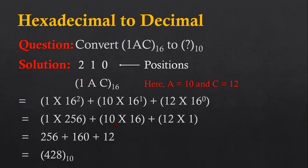The same formula will be used for conversion from hexadecimal to decimal. The number is 1AC, which is a hexadecimal number with base 16, and we have to convert it into decimal.